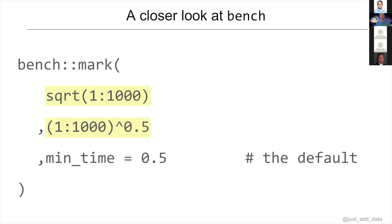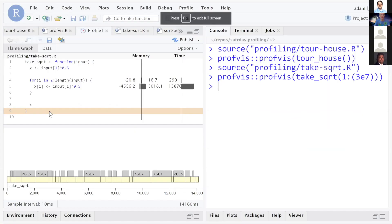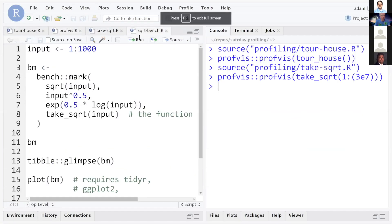Let's continue with our square root example from earlier. Recall we took a square root using a really poor approach. Let's say we did some research and learned we can use vectorization to take the square root — but now we want to know which approach is going to be fastest. We can just pass our different approaches into the mark function. It's important that these functions are accomplishing the same task so results are directly comparable.